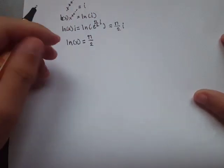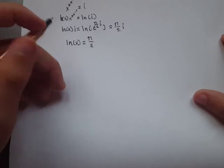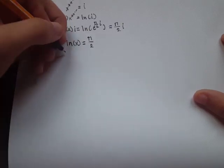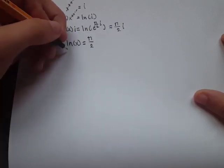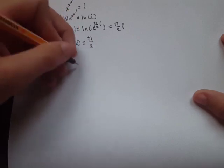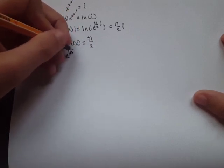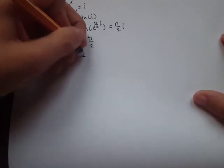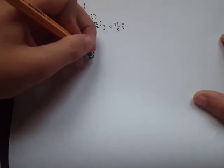So e to the natural log of x equals e to the π over 2, and these cancel leaving x equals e to the π over 2.